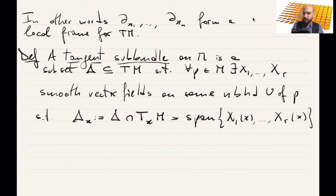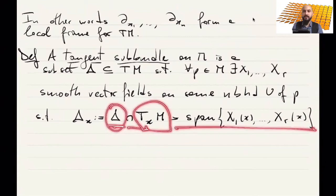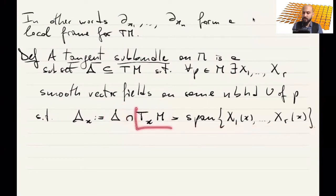Such that the fiber at x, defined as delta intersect tangent space at x, is spanned by these vector fields at x. Which means that whenever you intersect delta with the tangent space, we have exactly an r-dimensional vector subspace of TM, and this space is changing smoothly.